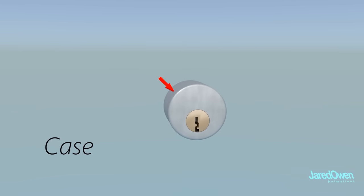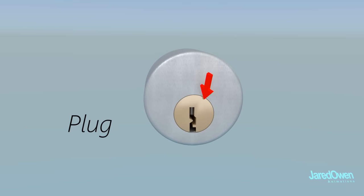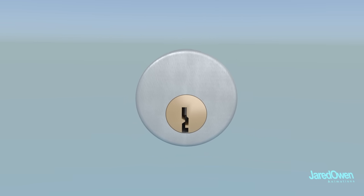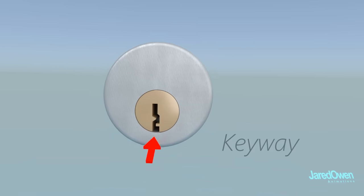This outside part is called the case. The inside part is called the plug. This is the part that turns when the correct key is put in. The opening here is called the keyway.